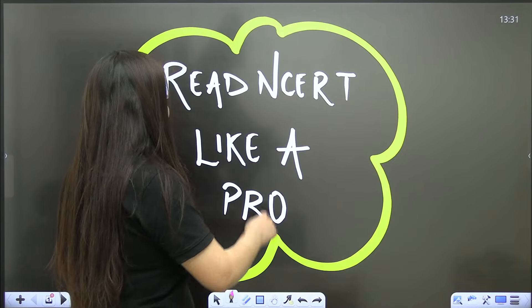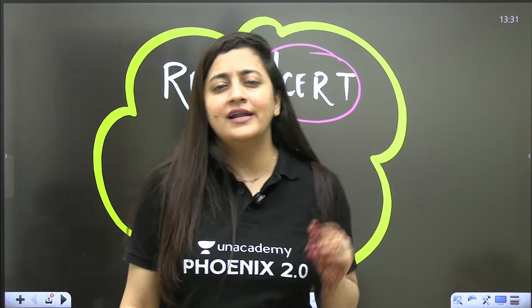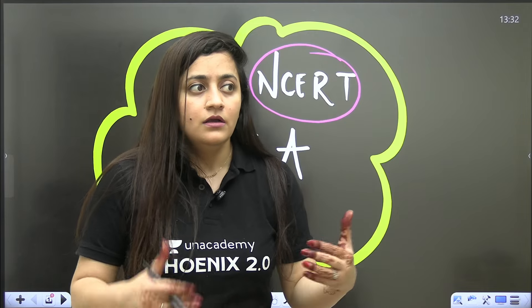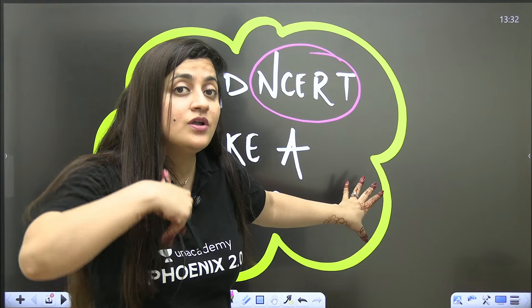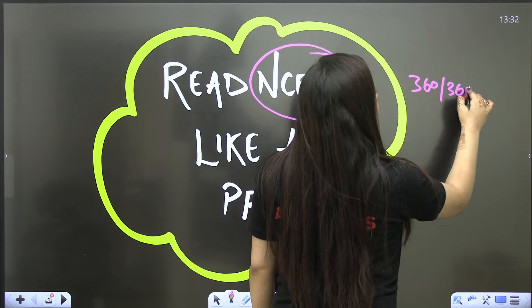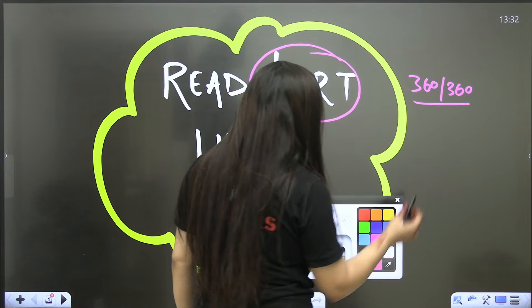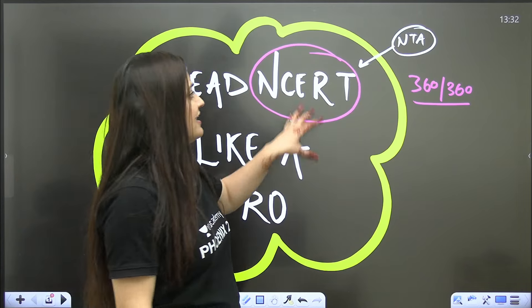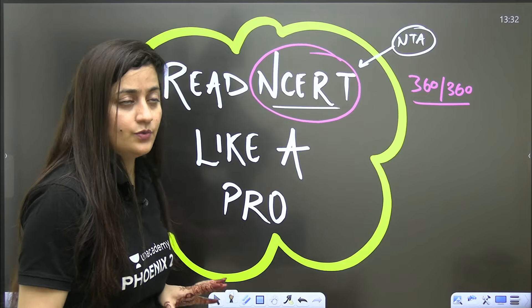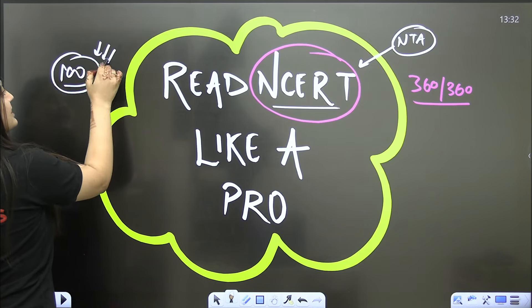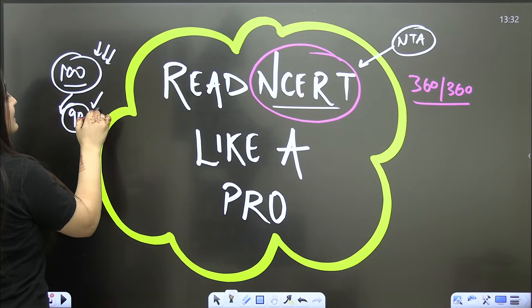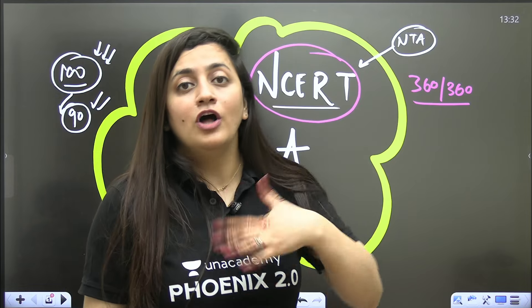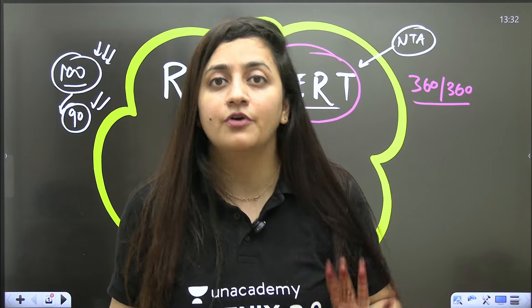Today's topic is very important and interesting — how to read the NCERT. You all know that ultimately the paper will come from NCERT, but still students are not able to score 360 out of 360. Despite knowing the paper comes from NCERT, you can't score full marks. Why? Because you don't know how to read the NCERT effectively. The National Testing Agency conducts this NEET examination and has made it very clear that questions will come from NCERT only.